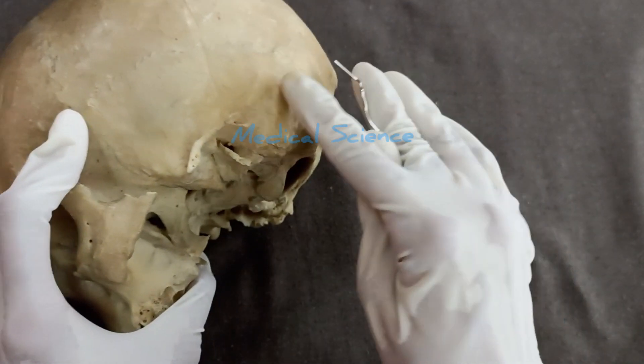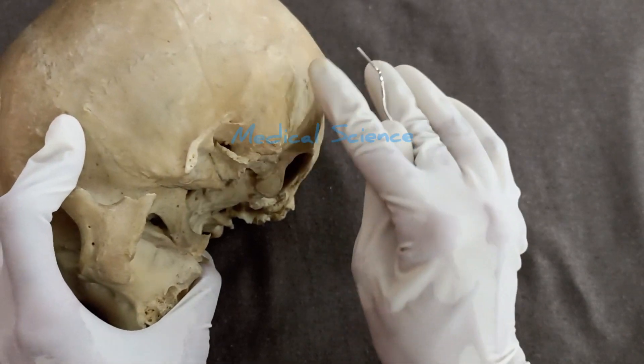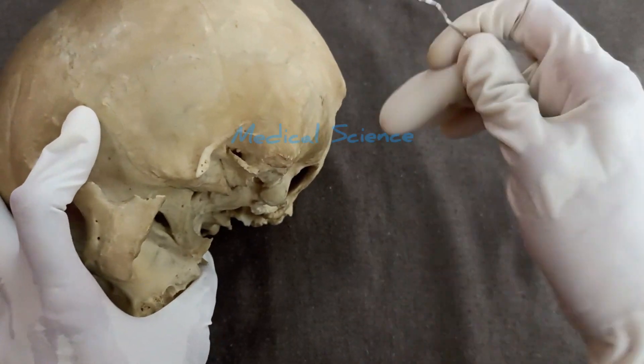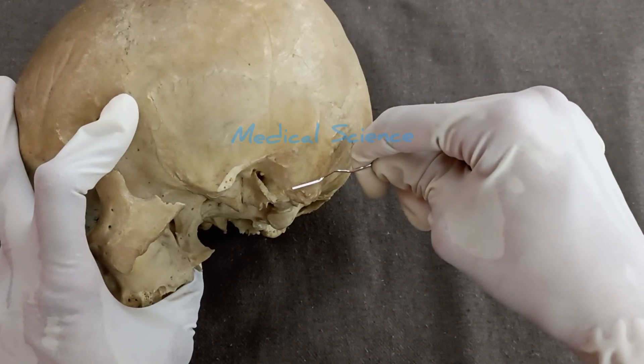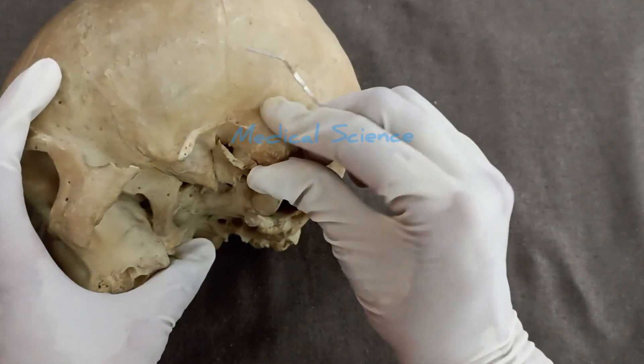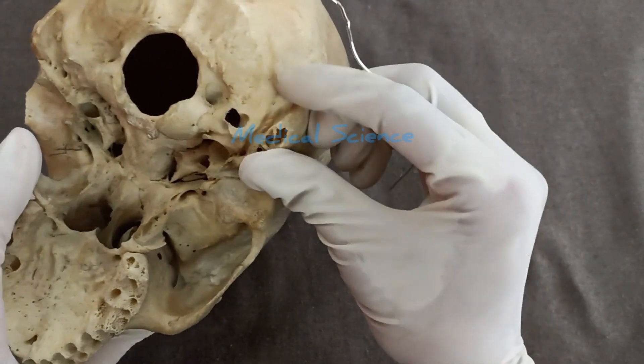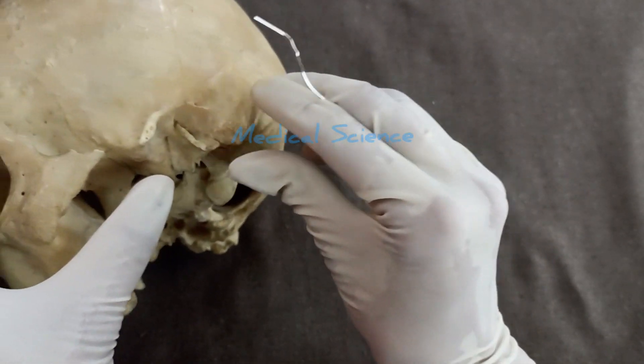The external surface of the mastoid is rough and it gives attachment to sternocleidomastoid, splenius capitis, and longissimus capitis muscles. In case of newborns, this mastoid process is not well developed. It develops when the child starts holding its head.